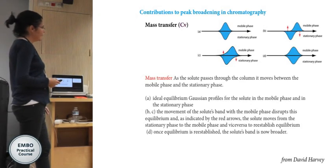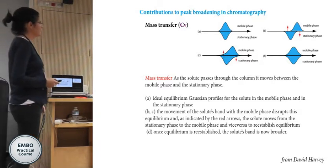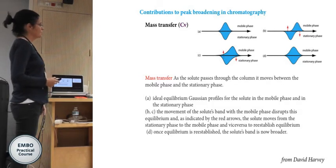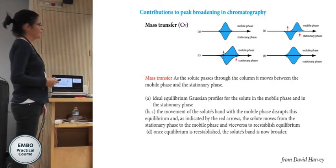The mass transfer phenomenon works the other way: the lower the flow rate, the higher its contribution. As the solute passes through the column it needs to reach equilibrium between the mobile and stationary phases, but since the mobile phase is moving, this equilibrium is broken and must be re-established by mass transfer from the stationary to the mobile phase — this makes the peak broader.